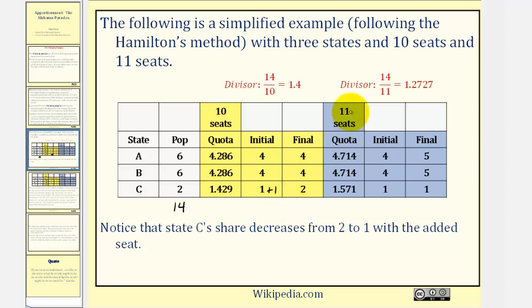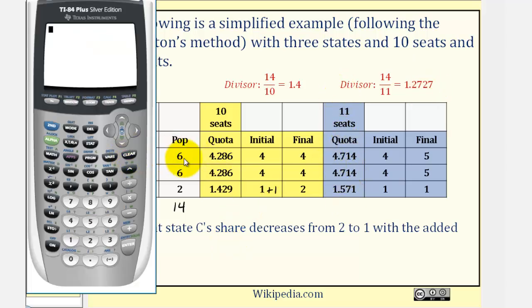Now let's compare this to when there are 11 seats. We already know the standard divisor is going to be approximately 1.2727. Let's go ahead and check our quotas. So again, for both state A and B, we'd have 6 divided by 1.2727, so the quota is approximately 4.714. And then for state C, we would have 2 divided by 1.2727, so the quota is approximately 1.571.